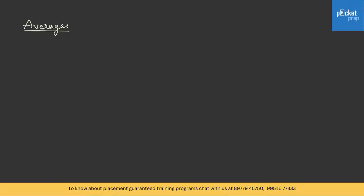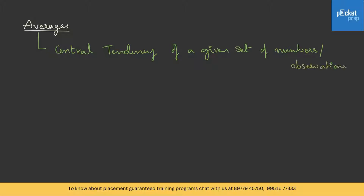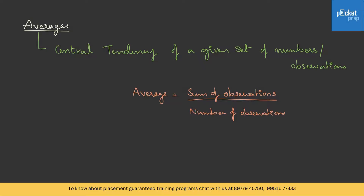This is the first lecture on the concept of averages. Average is a central tendency of a given set of numbers or observations. To calculate the average, we take the sum of the observations divided by the number of observations.